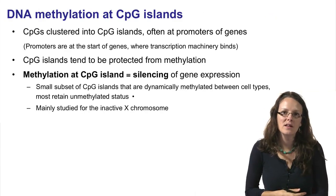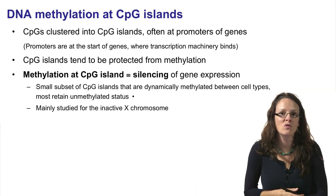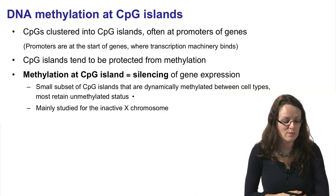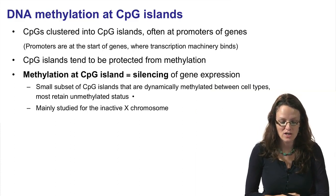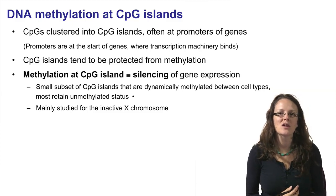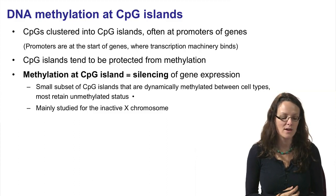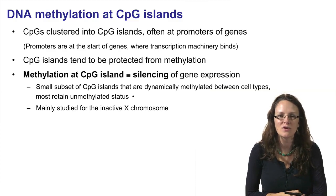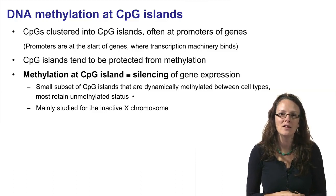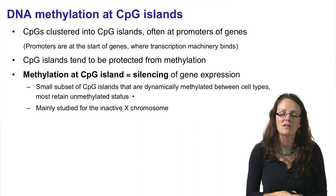CpGs are where methylation is almost exclusively found in mammals. Many CpGs are found in what are termed CpG islands — regions with more CG dinucleotides than expected by chance — and they tend to be found at the promoters of genes, which are the regions upstream of the start site of transcription where transcription factors bind. The general rule is that CpG islands tend to be protected from methylation. However, if methylation of a CpG island is found, this is almost universally synonymous with silencing of gene expression, making DNA methylation an inactive epigenetic mark.